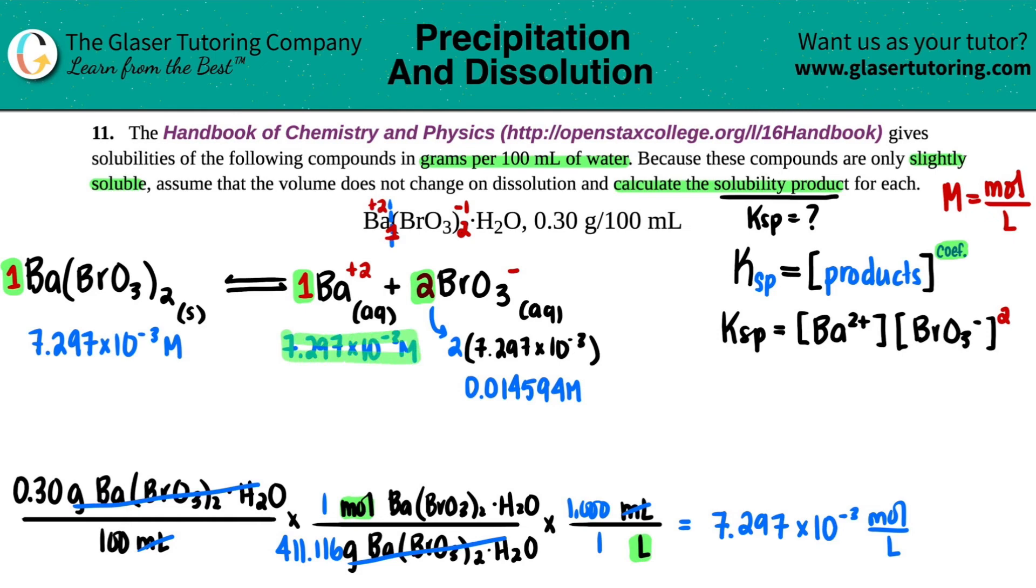And now these are your two molarities that are going into the Ksp equation. So the first one, nothing has to be raised, but the second one has to be squared. So the Ba is 7.297 times 10 to the negative three. And then the second one is 0.014594 squared. And I'm just going to plug it into my calculator. That's squared times 7.297 times 10 to the negative three. Two sig figs. 1.6 times 10 to the negative six.